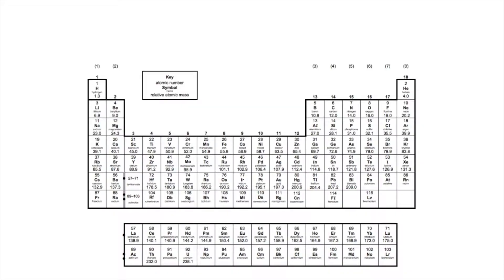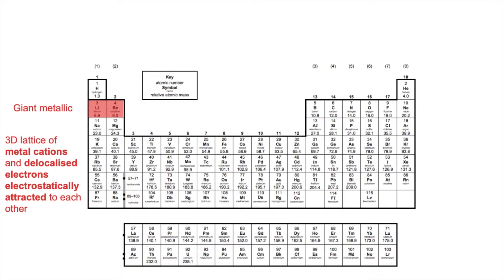Starting with period 2, the first two elements — those two metals — have giant metallic structures. That's a 3D lattice of metal cations, positive metal ions and delocalised electrons, and they are electrostatically attracted to each other.